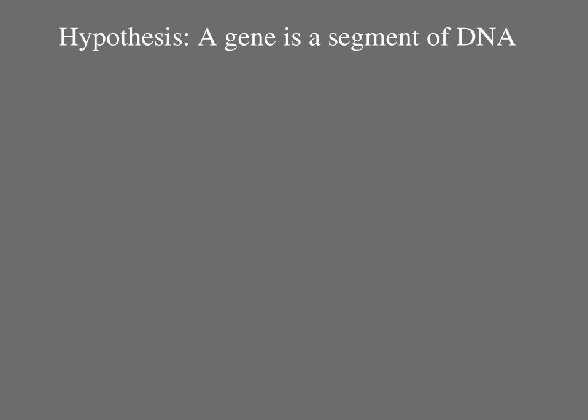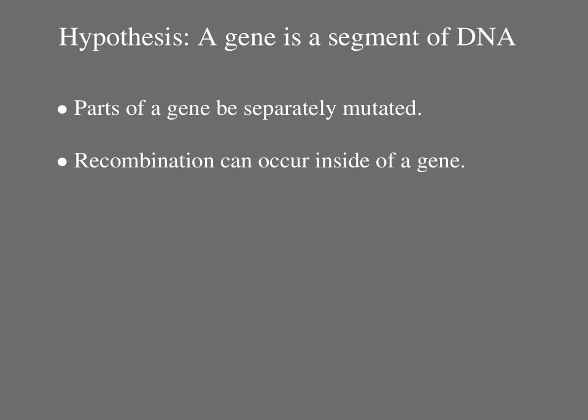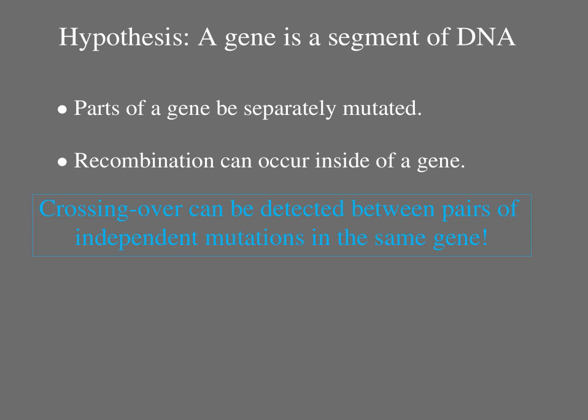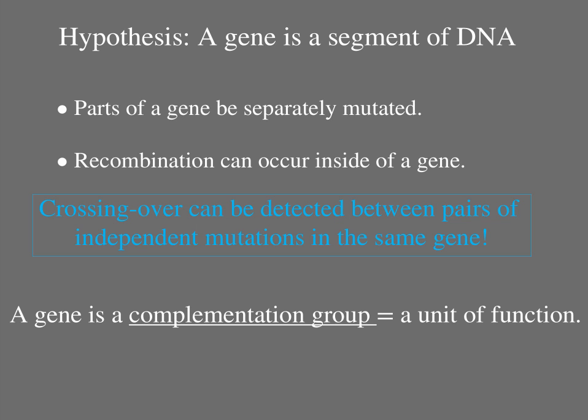Benzer started with a hypothesis that a gene is a segment of DNA. This hypothesis implies that parts of genes can be mutated separately, and that recombination can occur inside a gene. Benzer detected crossing over between independent mutations in the same gene, implying that the two mutations are indeed in separate base pairs, and that crossing over within the gene separates the mutations. These results implied that Benzer's hypothesis was correct. In addition, Benzer defined a gene as a unit of function, detectable experimentally as a complementation group.